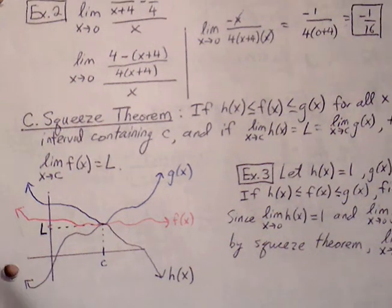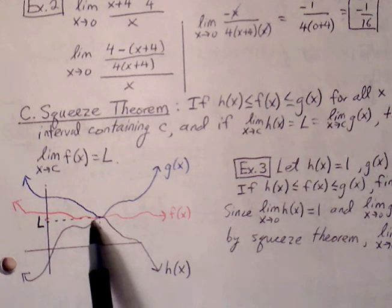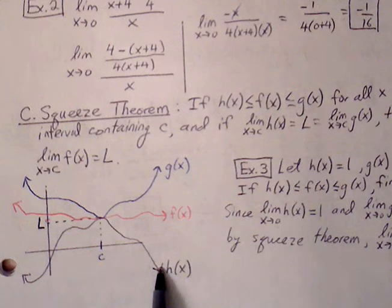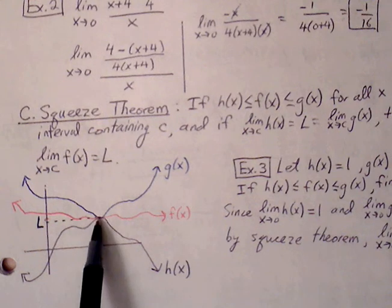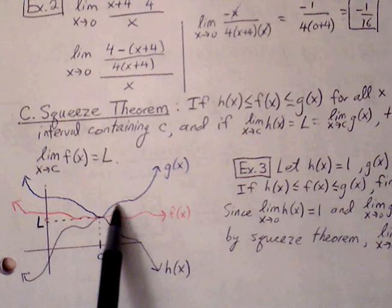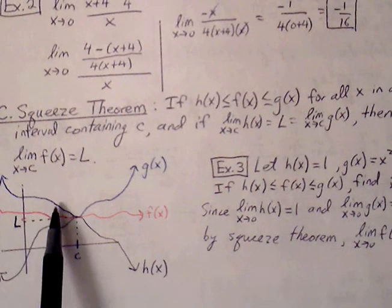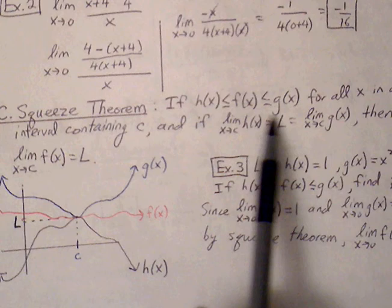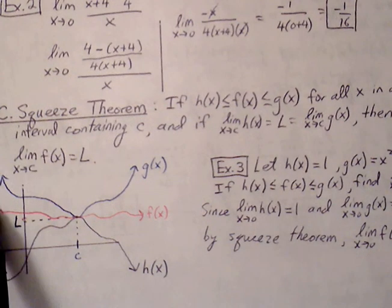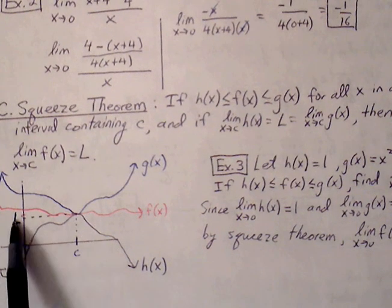Graphically, we can see this. The lower function h(x) is always less than or equal to the middle function f(x), and the upper function g(x) is always greater than or equal to f(x). So if the upper function approaches the same limit as the lower function, then because this relationship holds true, the middle function also approaches that same y value — that is, f(x) has the same limit as x approaches c.